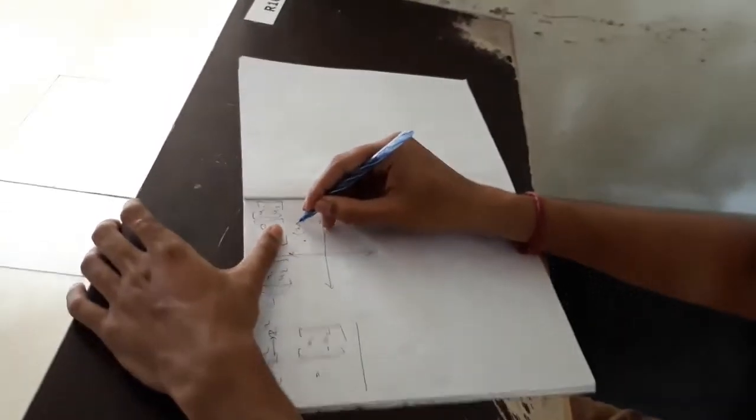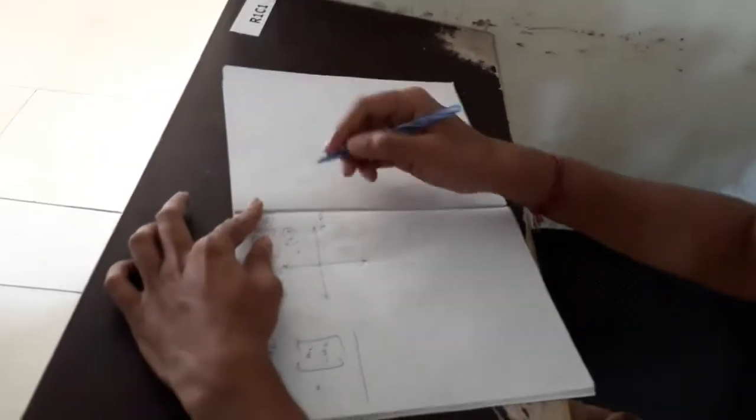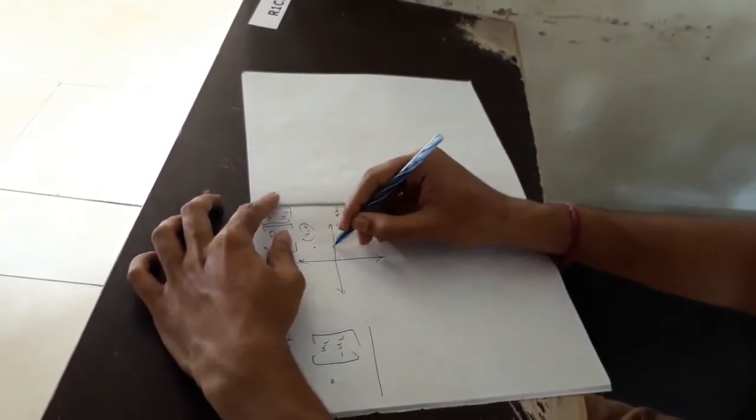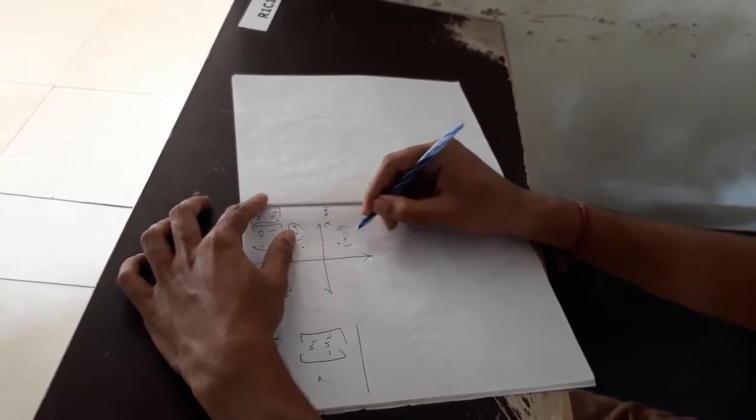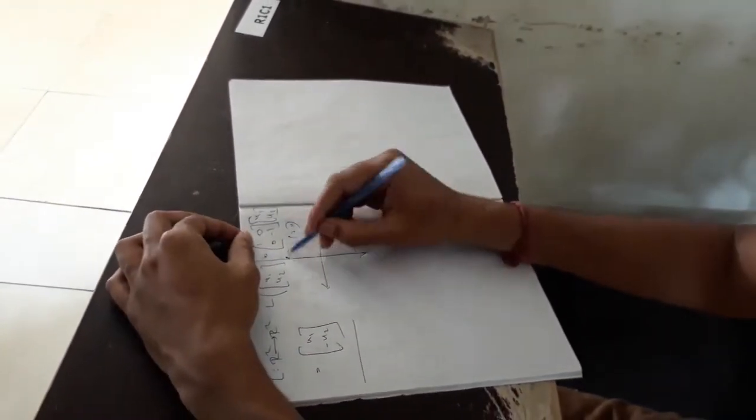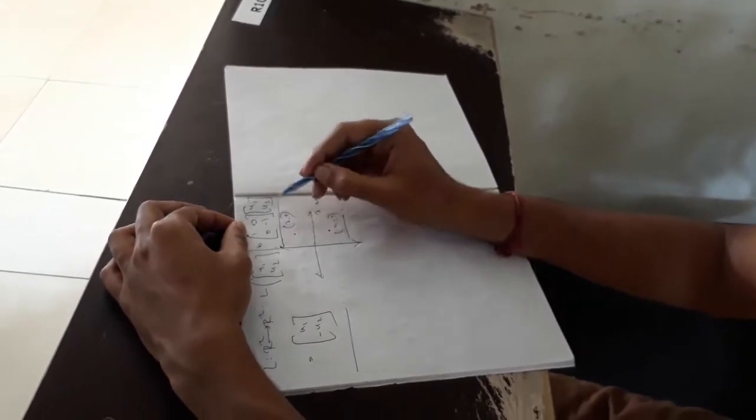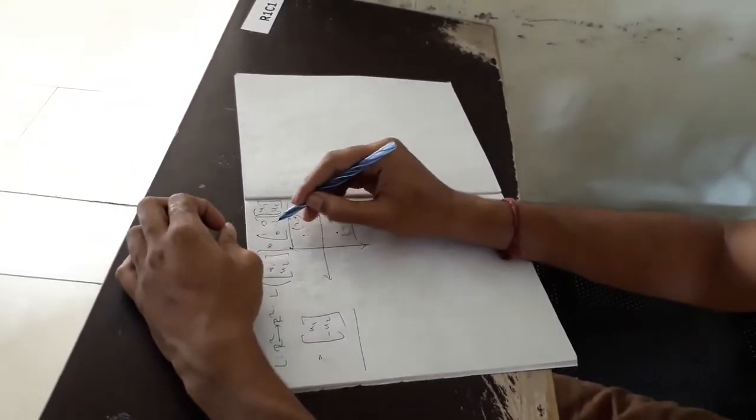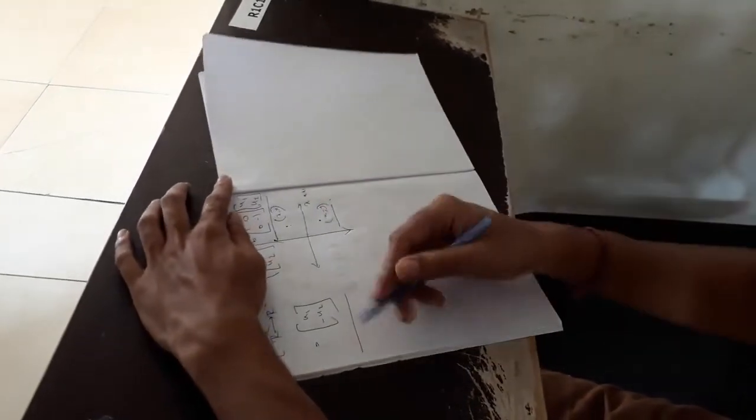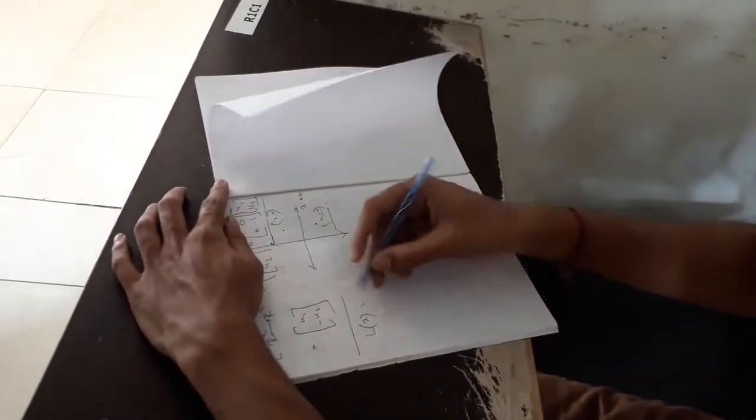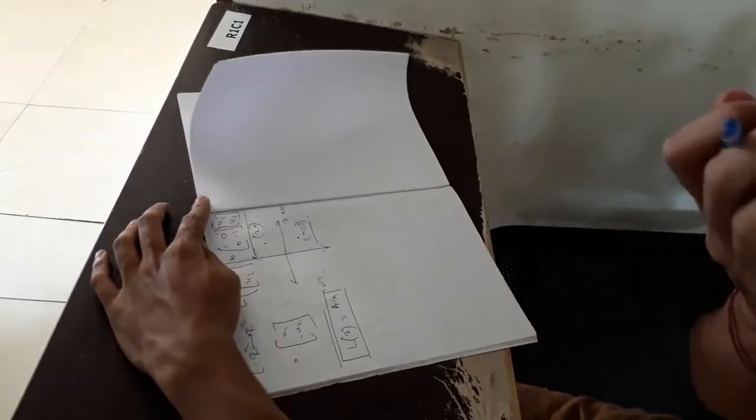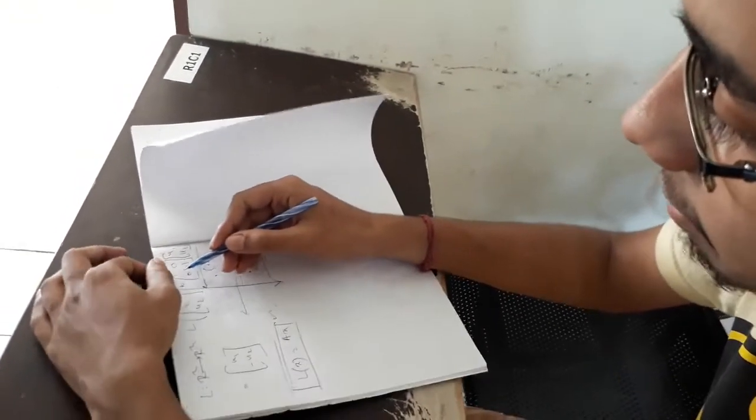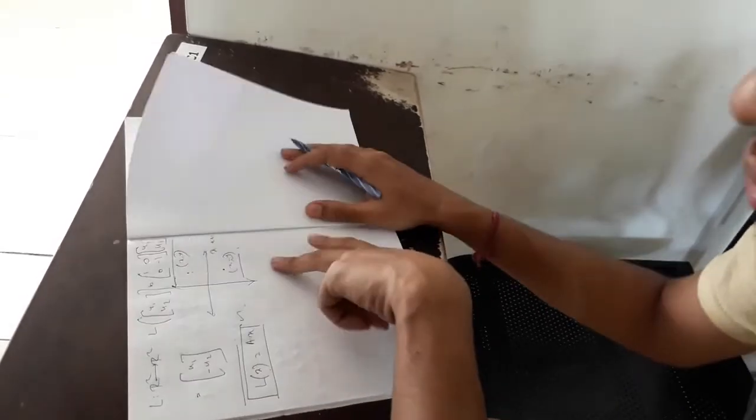Suppose L of R squared maps to R squared is L of u1, u2 equals 1 0 0 minus 1 times u1, u2 which equals u1, minus u2. You may think why I am writing like 1 0 0 minus 1. Suppose we are considering this reflection about x axis. This is the point x comma y. When we reflect this point through x axis, we will get a similar point in the fourth quadrant as x comma minus y. In linear transformation the basic rule is L of x equals a into x.